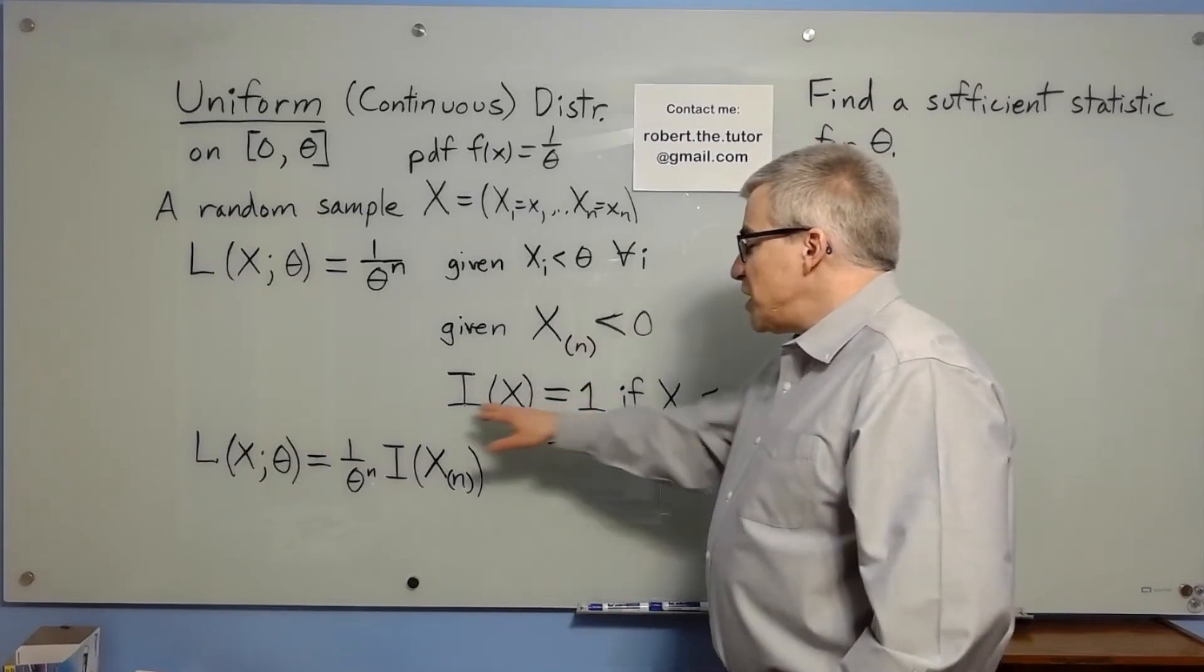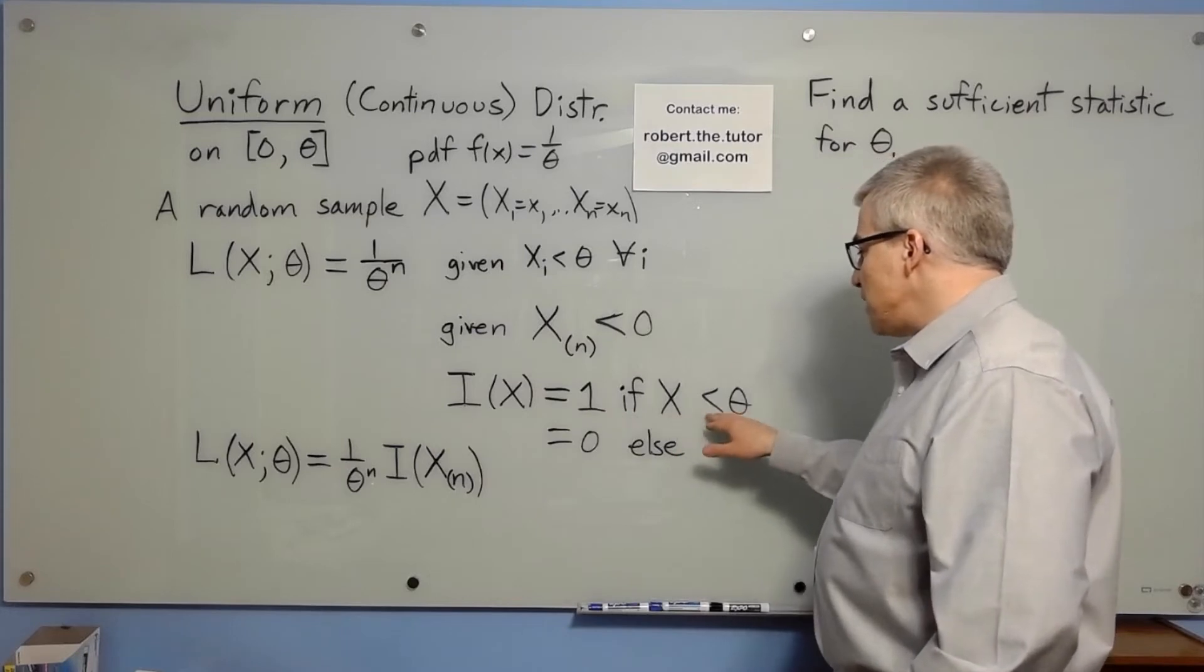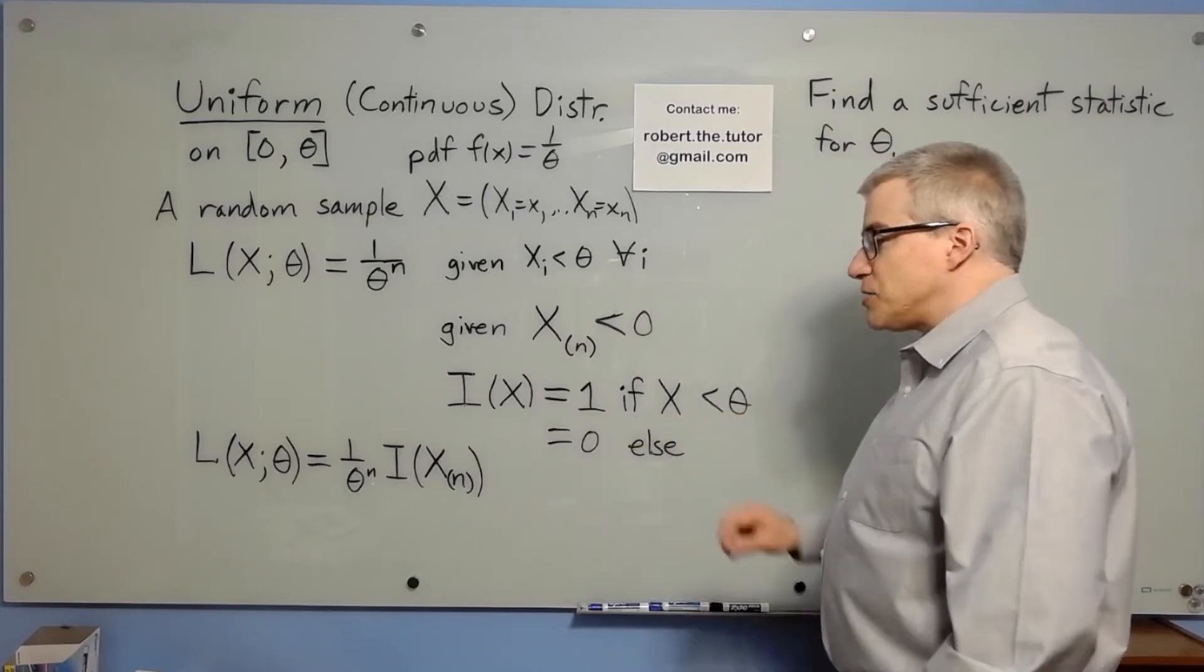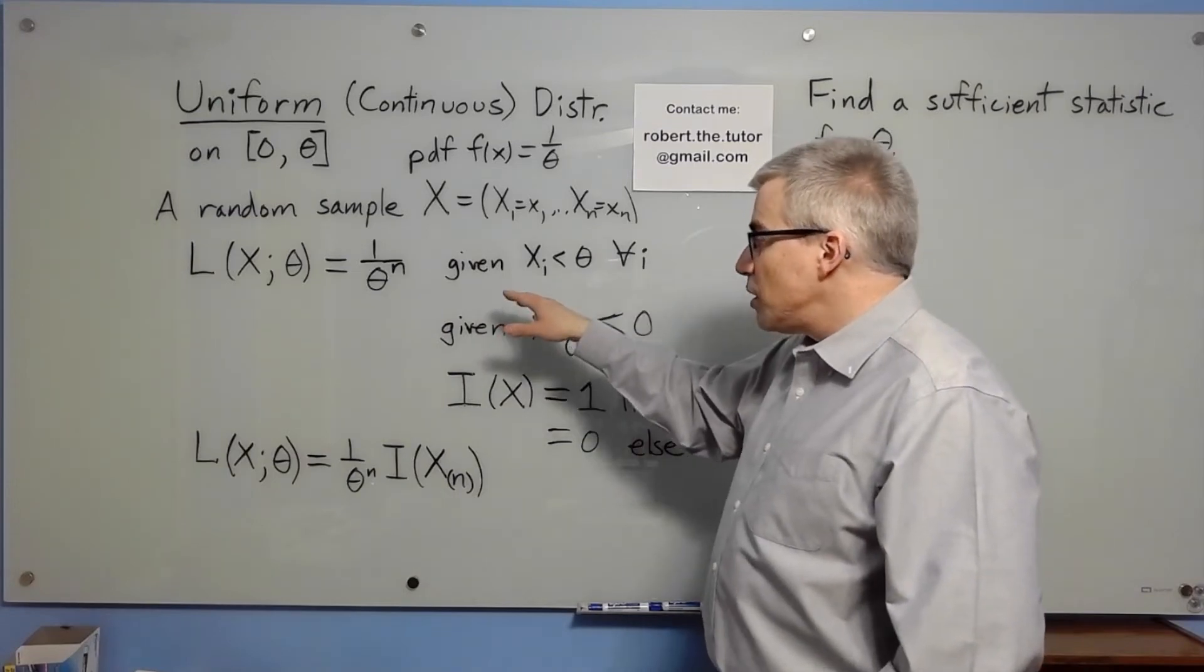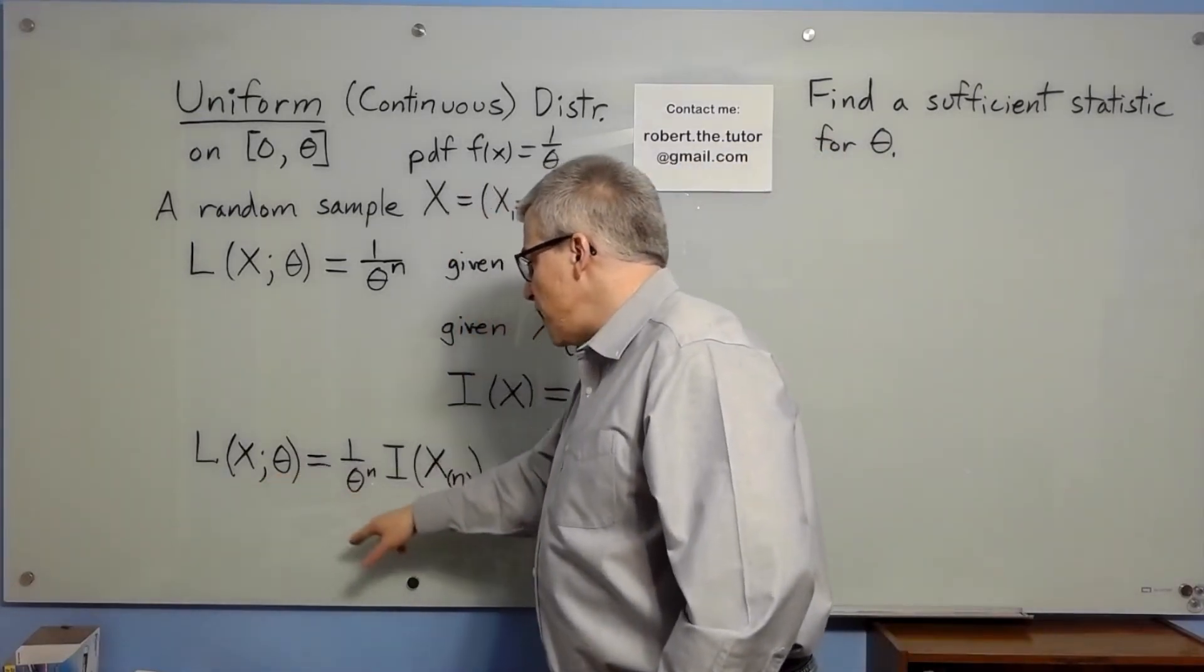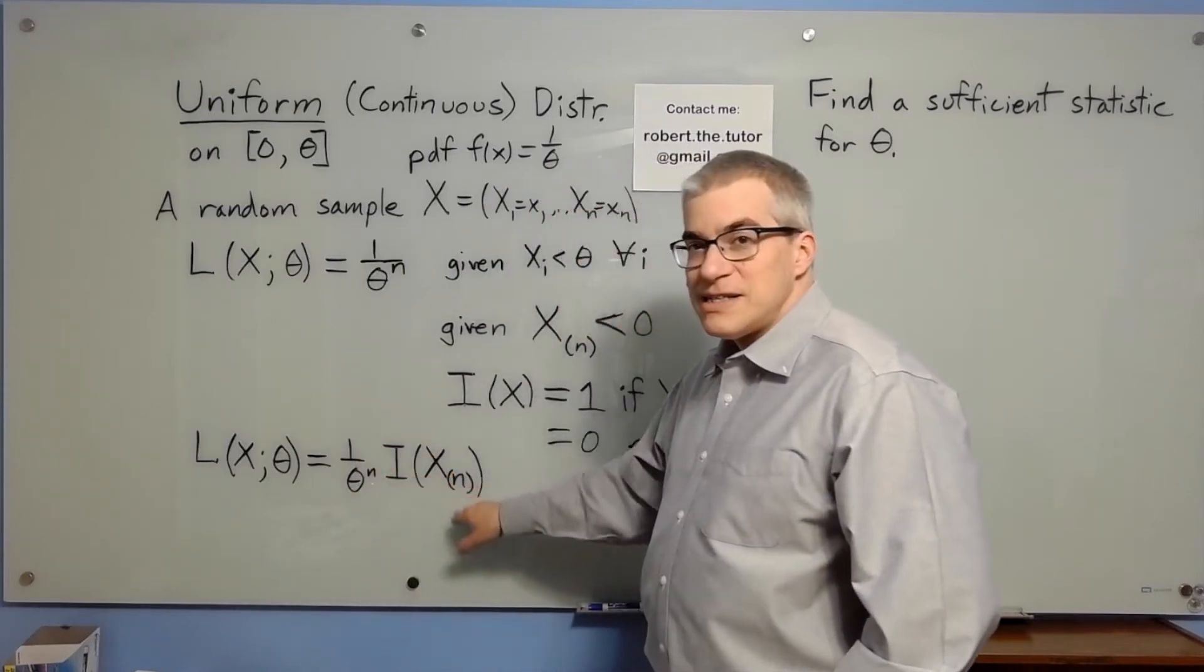So let's make up an indicator function, which is 1 if x is less than theta, and 0 else. And so really, to express that condition, we can say the likelihood of x given theta is 1 over theta to the n times the indicator function for xn.